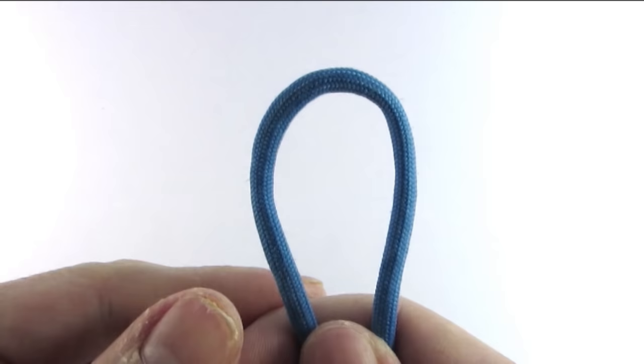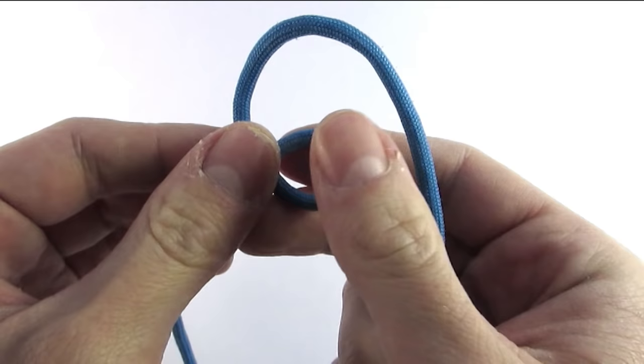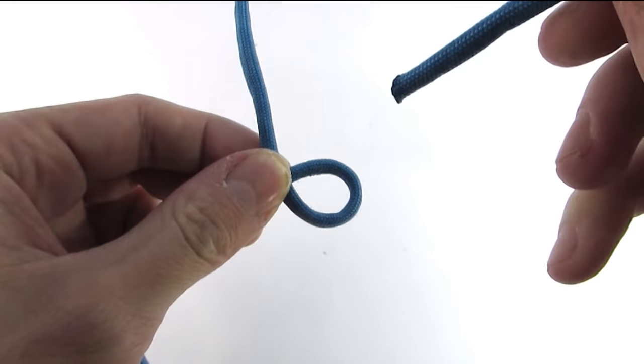To start it up we're going to fold a piece of paracord in half, make a loop on the left side, then insert the right end through this loop.